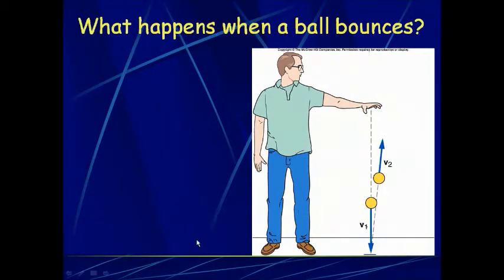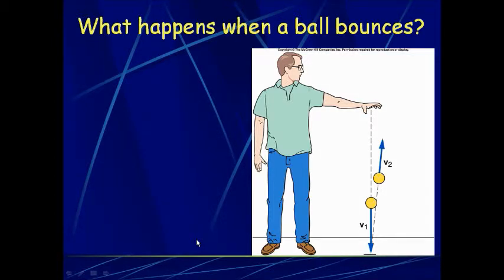Next, we looked at an example based on the equation impulse equals change in momentum. A person is blocking a ball with a certain velocity — the ball hits the floor and rebounds. You have the impulse, which is the force of the blow multiplied by the time of impact, and you have the change in momentum. Velocity initial is moving down, and velocity final is moving up, so be careful with direction.